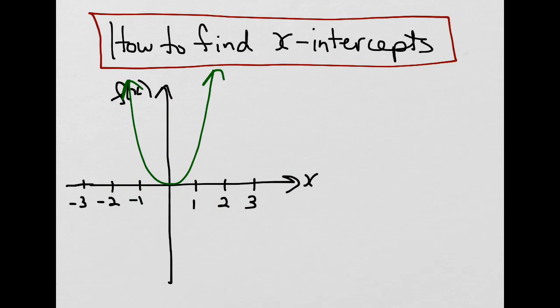In this case, the graph only touches the x-axis at one point, and that would be the point (0, 0). In this case, there is only one x-intercept.